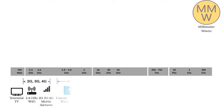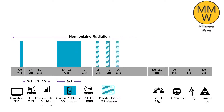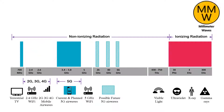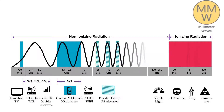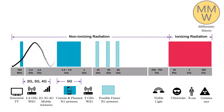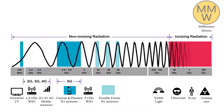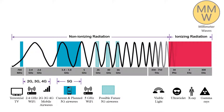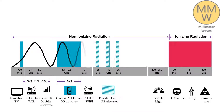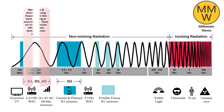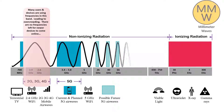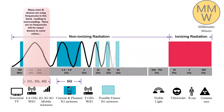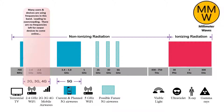Electronic devices including cell phones and wireless routers use specific frequencies on the electromagnetic spectrum. The frequencies used by 4G telecom operators are typically up to 3 GHz. As more and more devices are getting online, the current 4G frequency bandwidth is becoming crowded, leading to dropped connections and slower speeds.